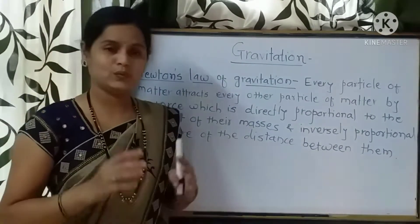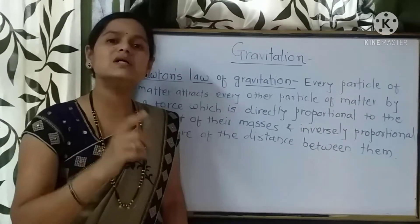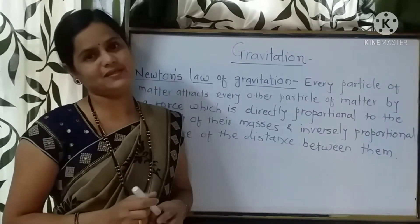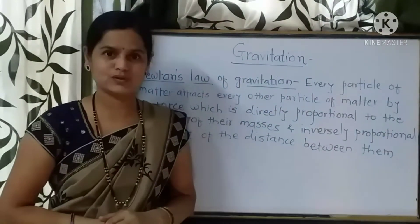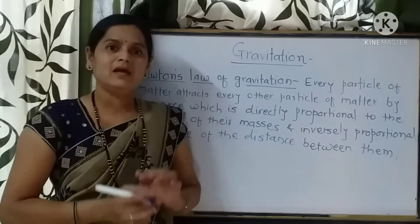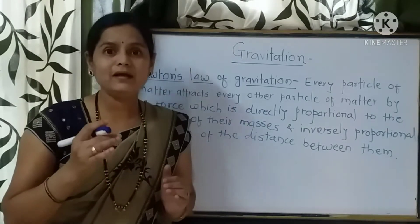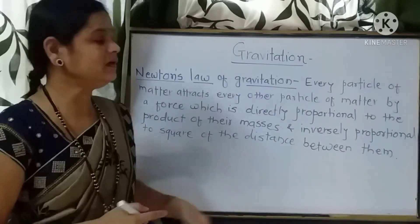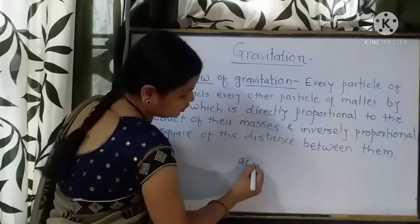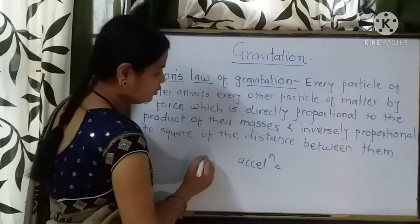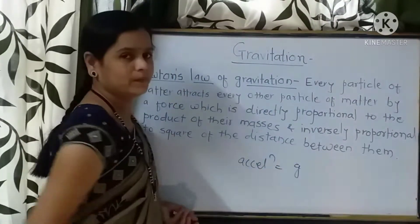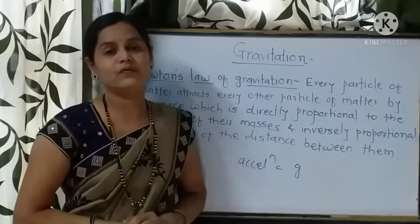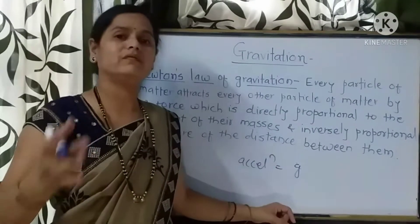Why does this happen? The basis is that there must be a certain force which attracts the bodies. Which force is this? Nothing but a gravitational force. Every object attracting towards the earth is falling with a constant acceleration, and that acceleration we call the acceleration due to gravity, that is g. It has specific values on the surface of the earth.